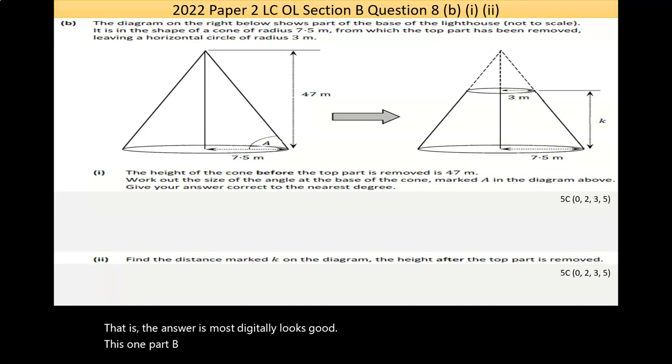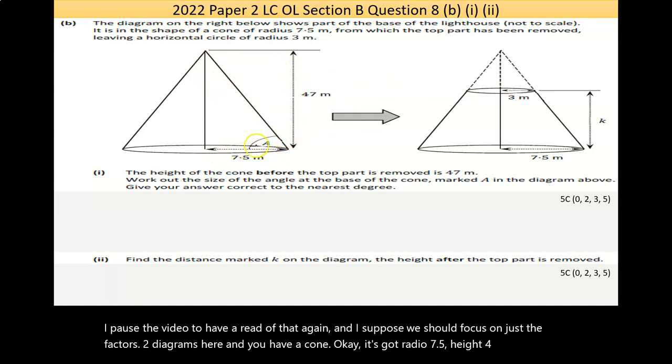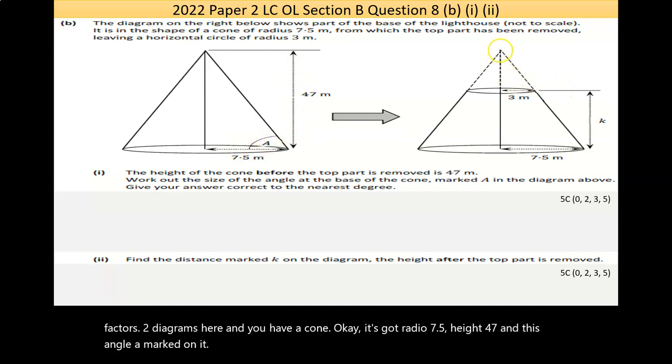Now, part B here says, The diagram on the right below shows part of the base of the lighthouse. It is in the shape of a cone of radius 7.5 meters, from which the top part has been removed, leaving a horizontal circle of radius 3 meters. So, this is tricky. Let's take our time. Now, I paused the video just to have a read of that again, and I suppose we should focus on just the fact there's two diagrams here. And you have a cone, it's got radius 7.5, height 47, and this angle A marked on it. And then you have the top of this cone removed, and that's probably where the lighthouse sits on top, and this is the foundation.